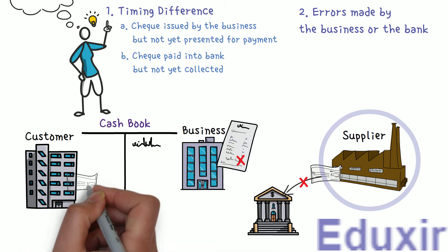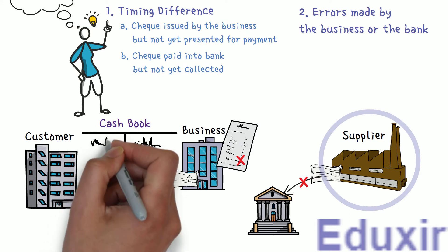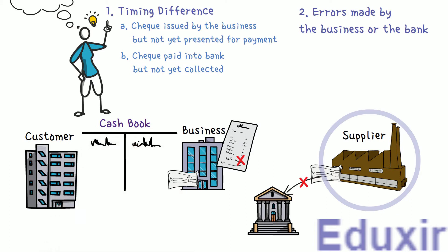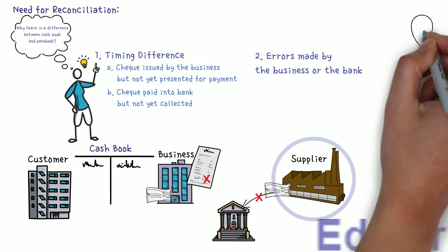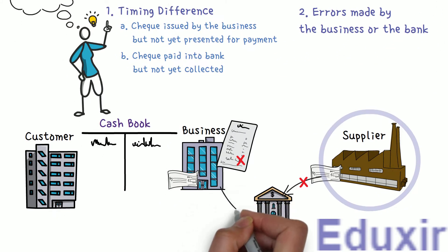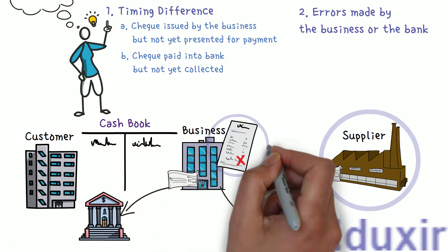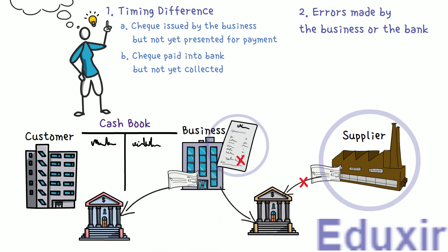When the business receives checks from its customers or debtors, they are immediately recorded on the debit side of the cashbook, so the cashbook shows that this amount is available in the bank. These checks could be from a bank in a different city or branch. In such cases, the bank may not have collected the check amount by the time the bank statement is received, so there will be a difference in the cashbook and the bank passbook.